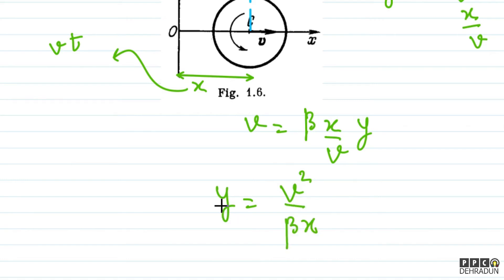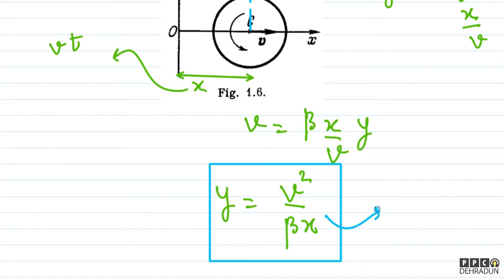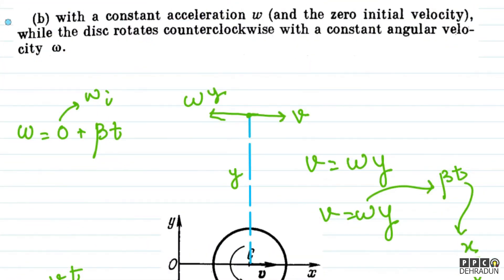So as we can see from this equation, what this equation tells us is which path the ICOR is following — it is following a hyperbola. Its trajectory is hyperbolic, and the equation is y equals v² upon beta x.